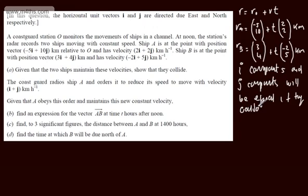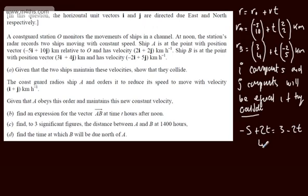If they collide, we want a common value of T. Considering the i components: for A we have -5 + 2T, and for B we have 3 - 2T. Setting them equal and solving: adding 2T to both sides gives 4T, adding 5 gives 8, therefore T = 2. That tells us the i components of the two ships will be the same at T = 2, which is 2PM.